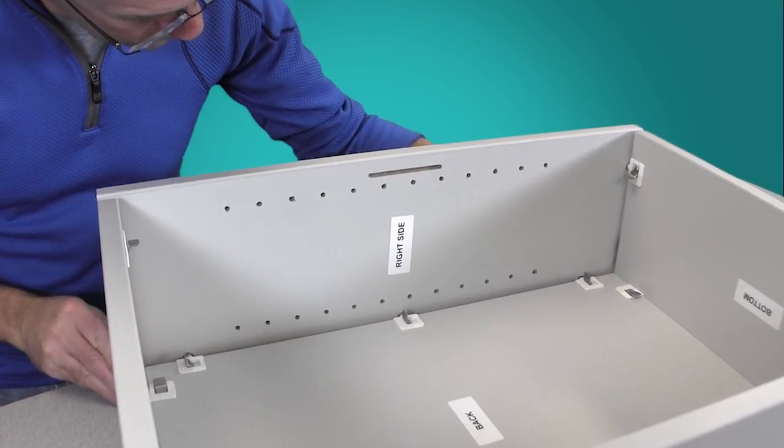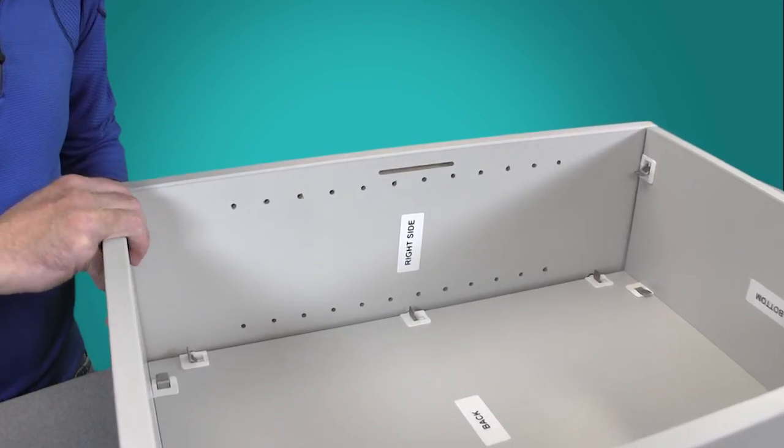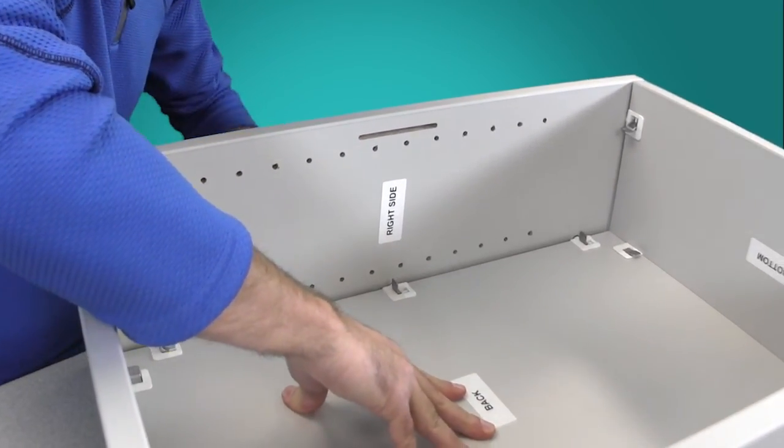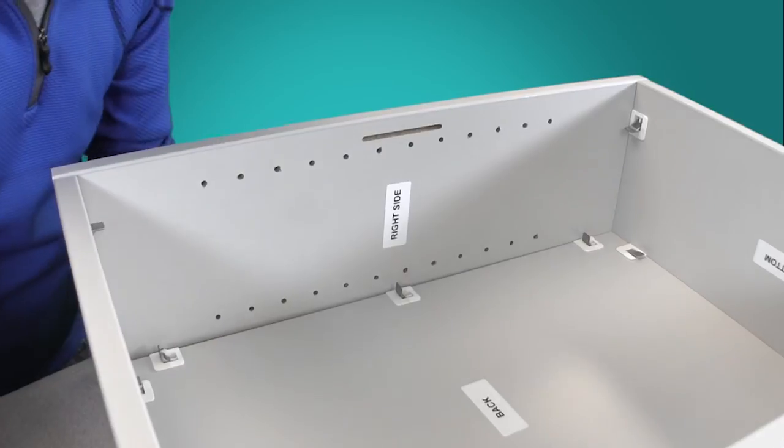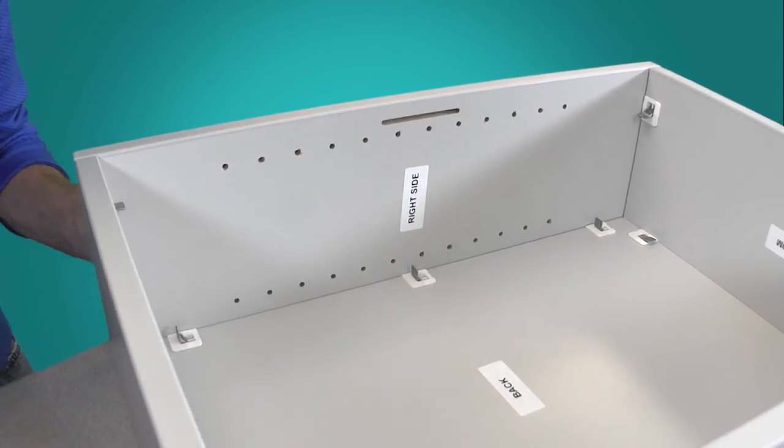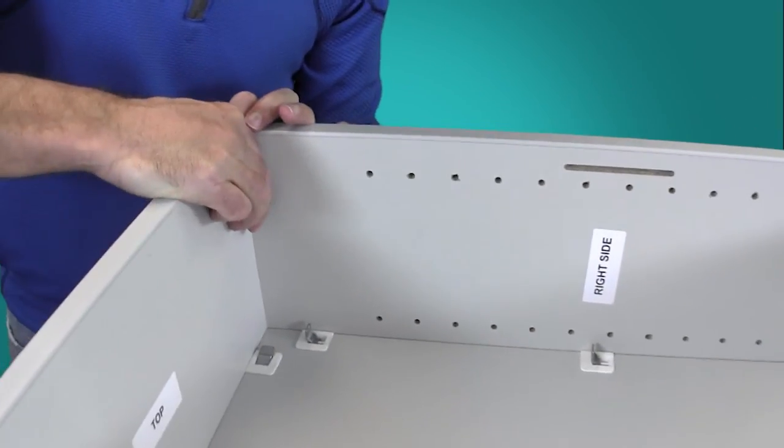Like the left panel, attach the right side by aligning the pre-drilled holes with the connection fittings in the back, top, and bottom panels. Push the panels together and press the fitting toggles down to secure.